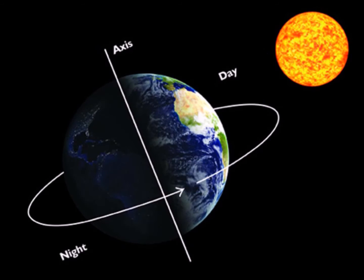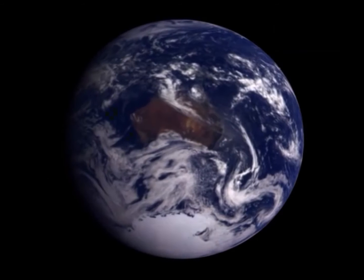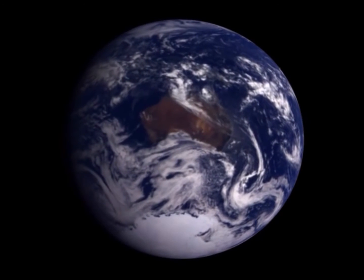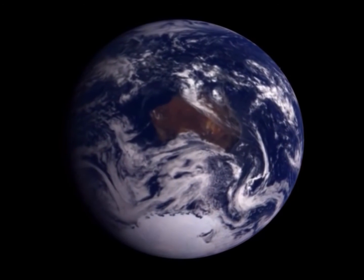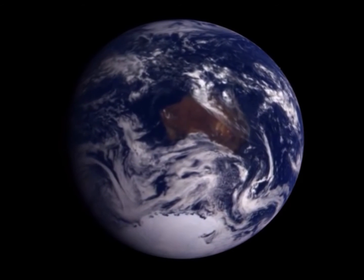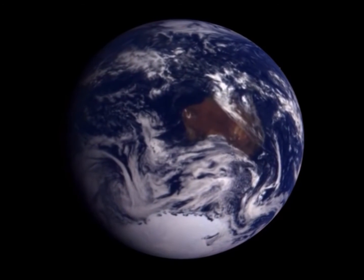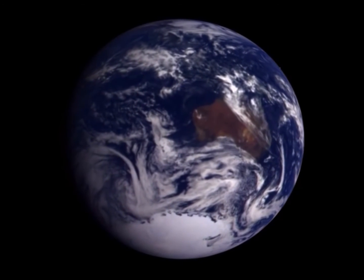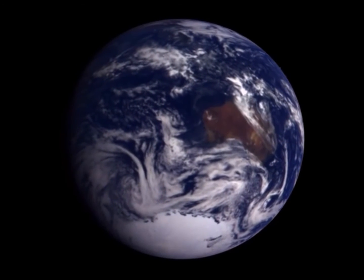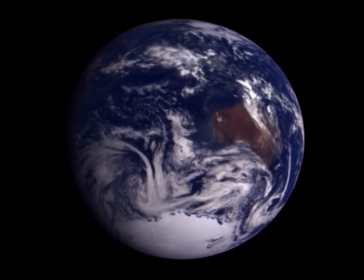The part of the planet we are on moves into and out of sunlight as Earth makes one rotation on its axis. So as an adult you know that one Earth day is equal to the amount of time it takes Earth to make one rotation on its axis. End of story, right? Well, not quite.